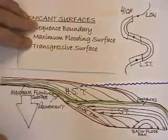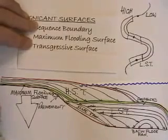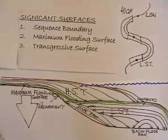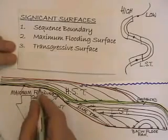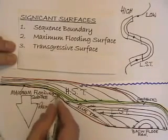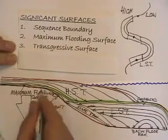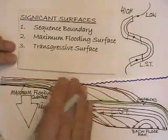The other important surface is the transgressive surface, which represents the first movement of sediment up over the shelf margin when sea level rises above the edge.